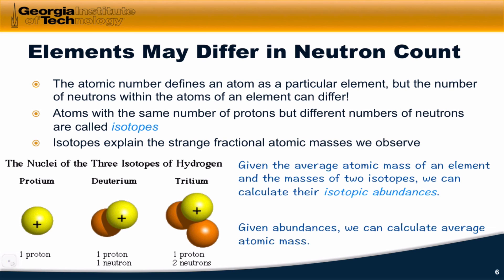We can also calculate average atomic mass given abundances. And the idea here is very similar. We're going to use this same idea that the average atomic mass is just equal to the sum of the product of each abundance times the mass of that isotope. Given the a sub i's and the m sub i's, it's a simple matter of plugging into this formula to calculate the average atomic mass.